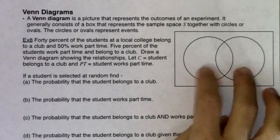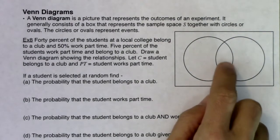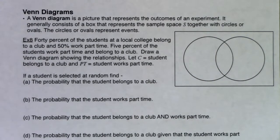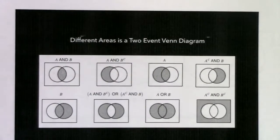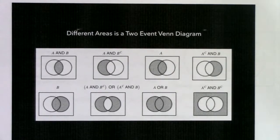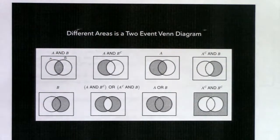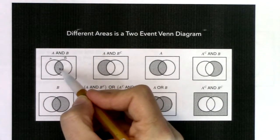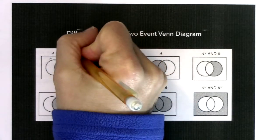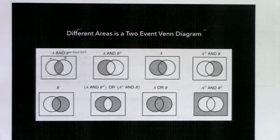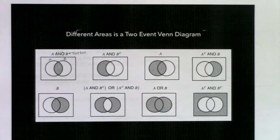Here's your general two-event Venn diagram. The entire box represents the sample space. We've got one circle representing event A, one circle representing event B. If you go to the back side of the formula sheet, you'll see a breakdown of the different areas of the Venn diagram. The football-shaped thing in the middle represents A and B — I call it the football. The 'and' is always the football.